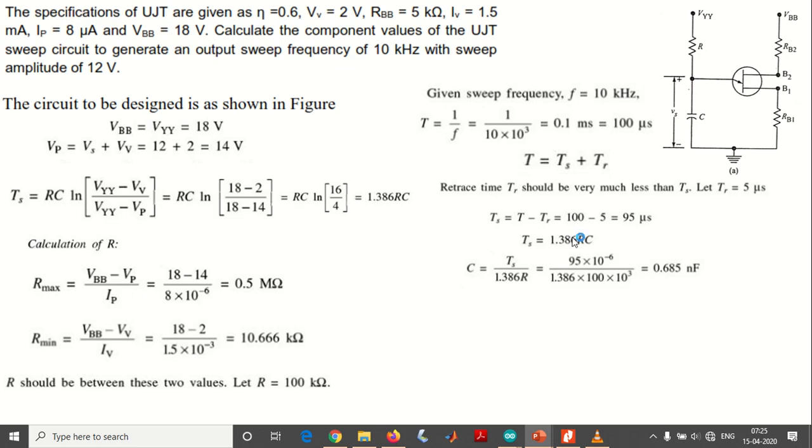Now substituting these values in TS equals 1.386 RC. From this, C equals TS by 1.386 R. Substituting R equals 100 kilo ohms and TS equals 95 microseconds, we get a value for the capacitor C equals 0.685 nanofarads.